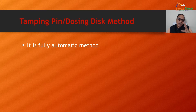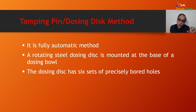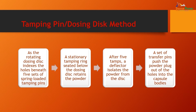The tamping pin or dosing disc method is a fully automatic method. A rotating steel dosing disc is mounted at the base of a dosing bowl and has six sets of precisely bored holes. As the rotating dosing disc indexes the holes beneath five sets of spring-loaded tamping pins, a stationary tamping ring below the disc retains the powder. After five tamps, a deflector isolates the powder from the disc, and transfer pins push the powder plug out of the holes into the capsule body.